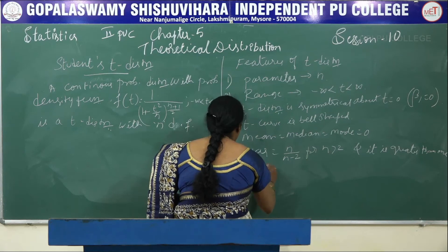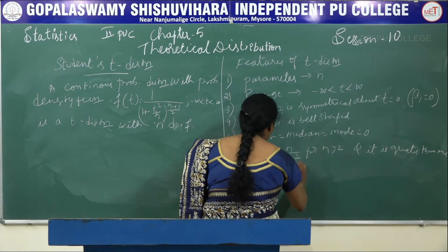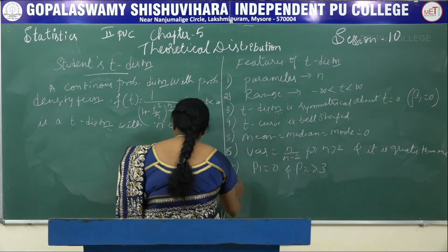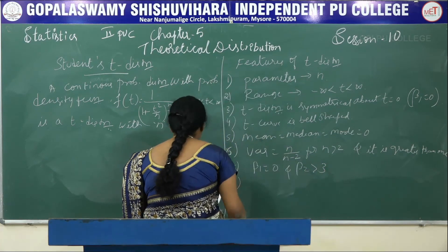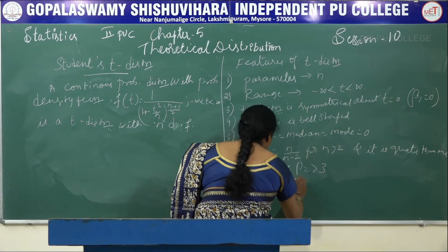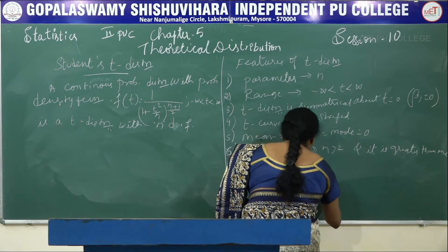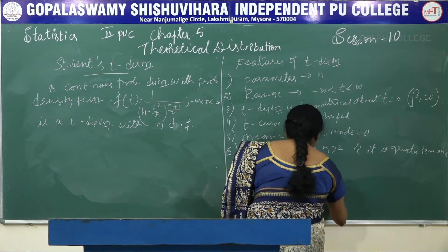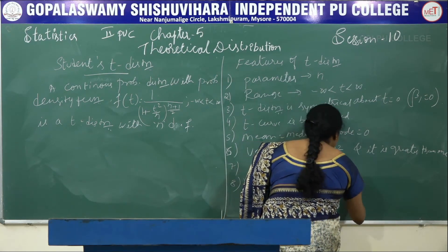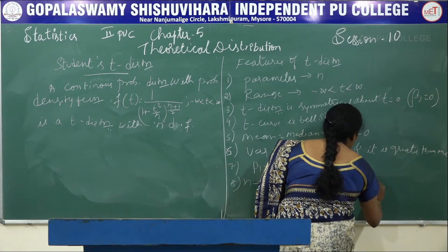For T distribution, β₁ = 0 and β₂ > 3. When n tends to infinity, the T variate tends to follow the standard normal distribution.